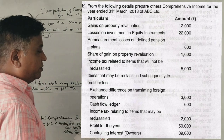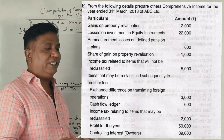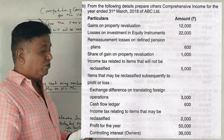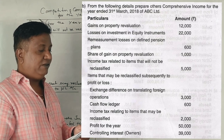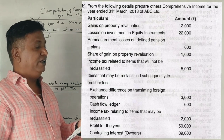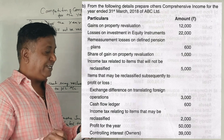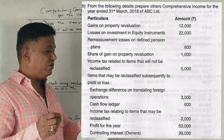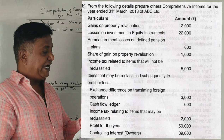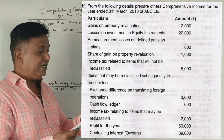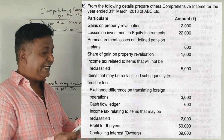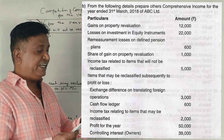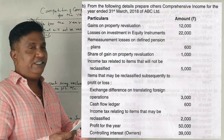First question: from the following details, prepare other comprehensive income for the year ended 31st March 2018 of ABC Limited. Items include: gain on property revaluation, losses on investment in equity instruments, re-measurement of losses on defined pension plans, share of gain on property revaluation, income tax related to items that will not be reclassified, items that may be reclassified subsequently to profit and loss account, exchange difference on translating foreign operations, cash flow hedges, income tax related to items that may be reclassified: 2,000, profit for the year: 50,000, controlling interest: 39,000.